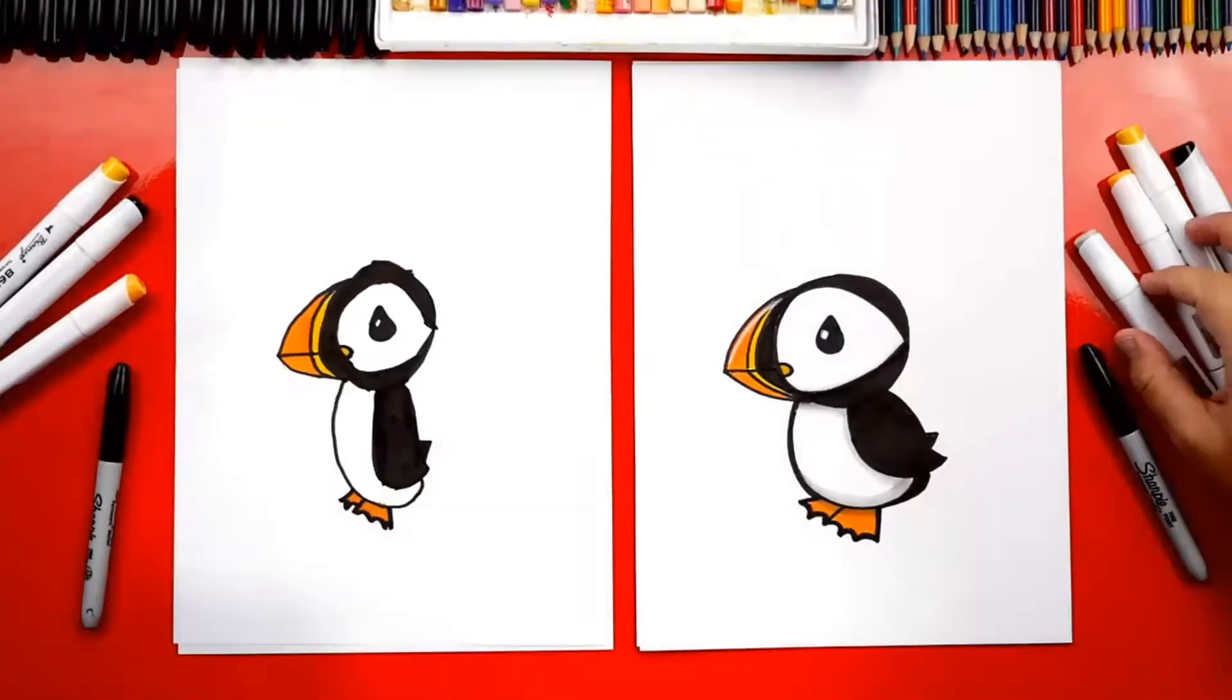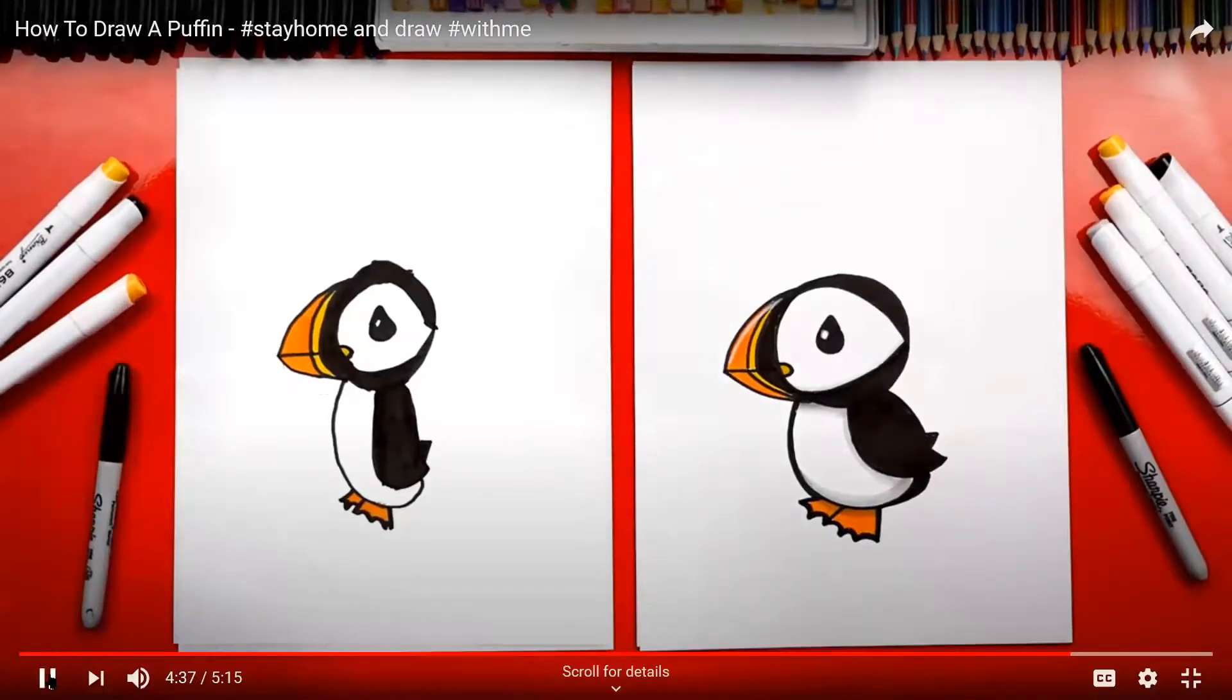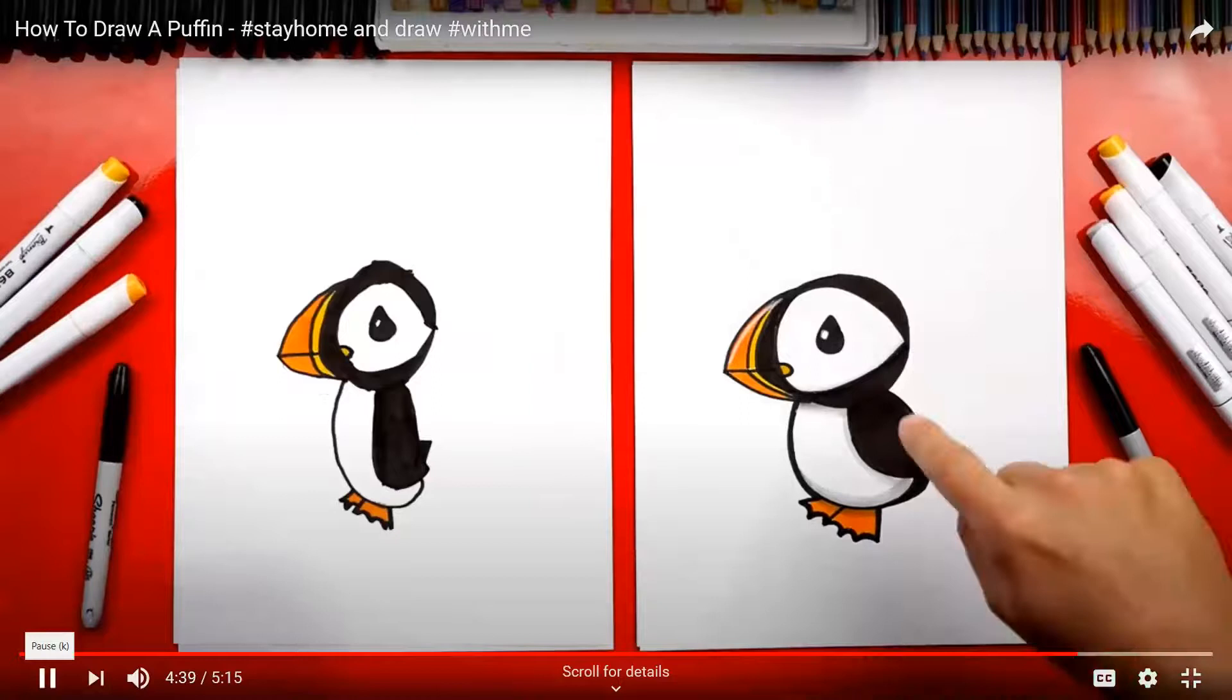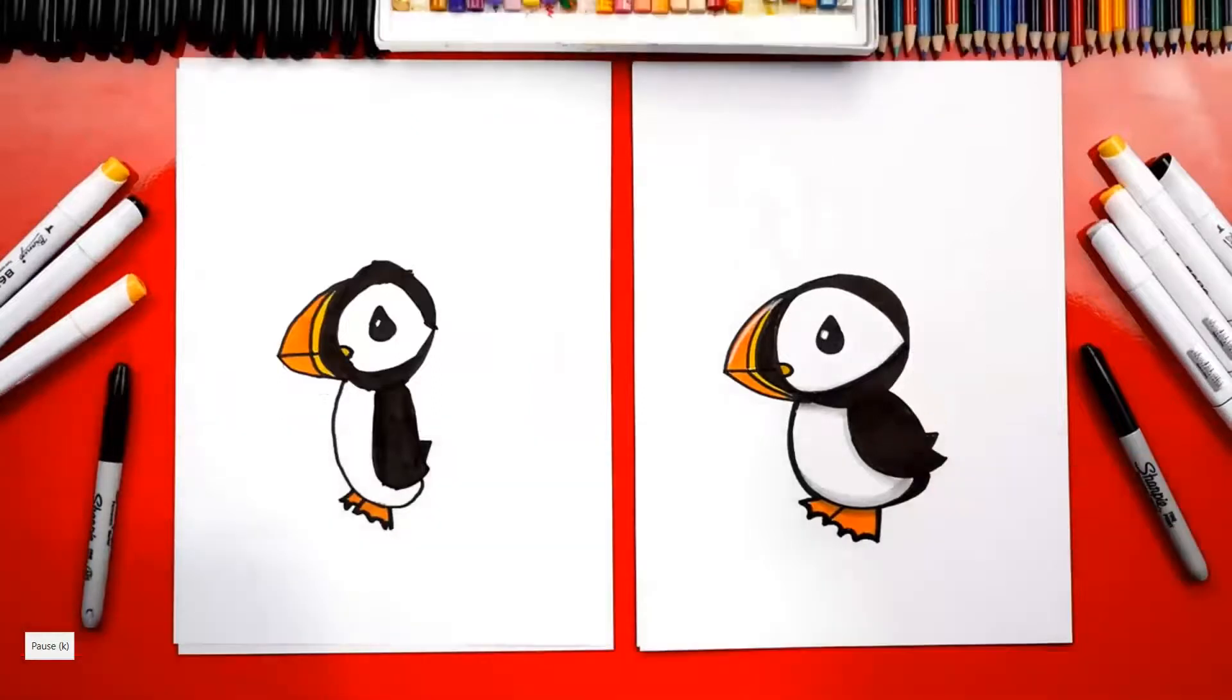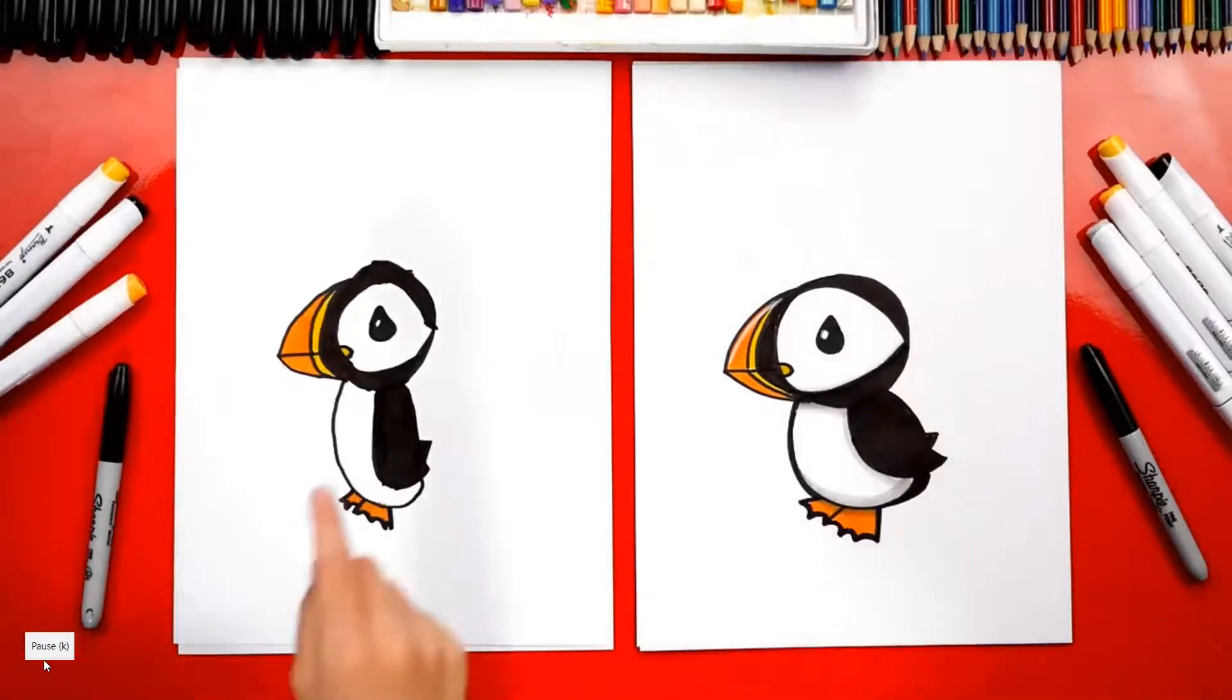We use markers, but you can use whatever you have at home, like crayons or colored pencils. What else can our friends do to their drawings? Add the background! A background would be way cool. You could add a rock down here or maybe even the ocean in the background or a tree.